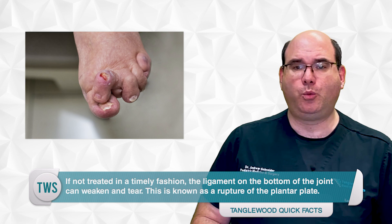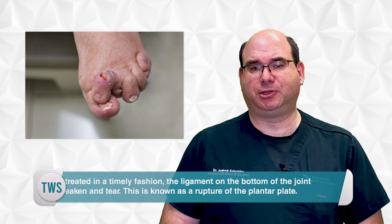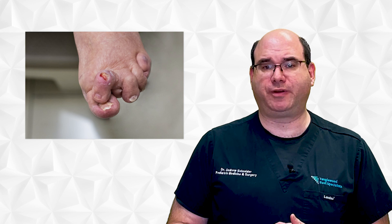A plantar plate rupture weakens the support of the toe. The toe is no longer able to be held down in a correct position. As a result of this injury, the toe pops up and shifts over towards the great toe.